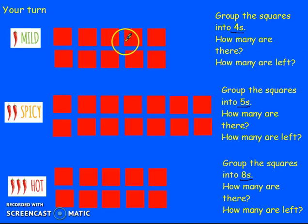Well done, let us check. So we want to group it into groups of 4. So there's a group of 4. There's a group of 4. And we have 1, 2 left over. So we have 2 groups of 4 with 2 remaining. So it will be 2 remainder 2.